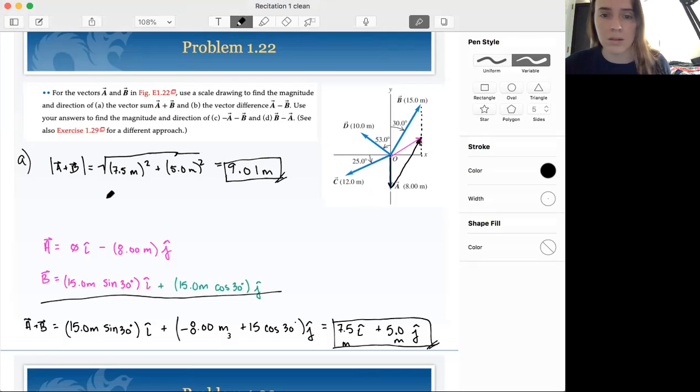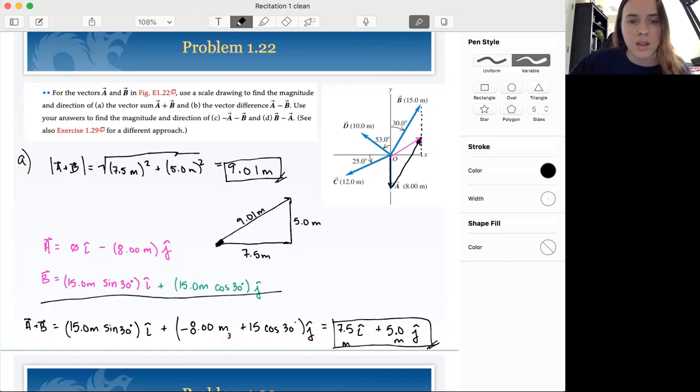We can use trig. So if we make a big triangle from our, so we know this is 9.01 meters. We know this is 7.5 meters and we know that this is 5.0 meters. The general convention for direction on your vectors is measured from the positive x axis. So that would be this angle here. So all of these angles are not standard convention.